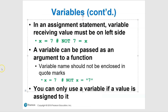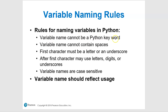Now let's look at naming rules. A variable name cannot be a Python keyword or reserved word. For example, 'print' is a reserved word, so you can't say 'print equals 49' — that will give you an error. Be very careful about that.